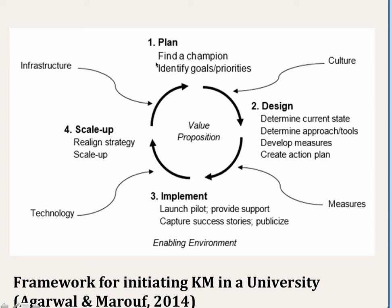In this 10-step process, the model is divided into four phases: planning, designing, implementing, and scaling up. At the very center is the value proposition — why do you want to implement knowledge management in the first place? In a university setting, this could be improving faculty productivity, retaining and attracting more students, increasing the university's prestige and reputation, or being more profitable. Once clear about your goal, the first step is finding a champion — someone in higher management who would support the process — and then forming a knowledge management planning team.